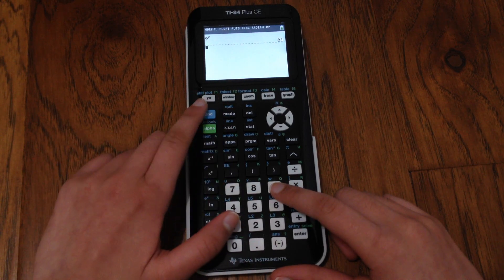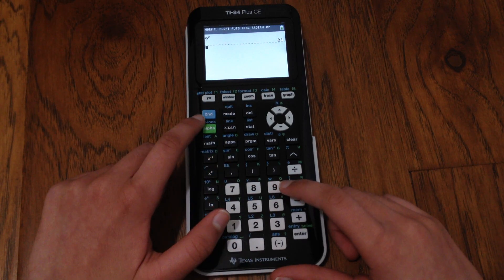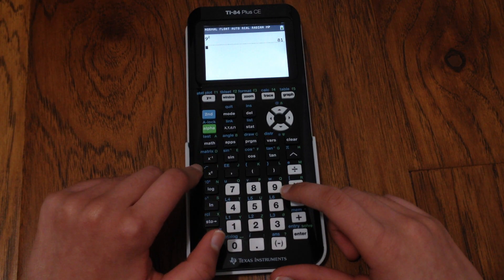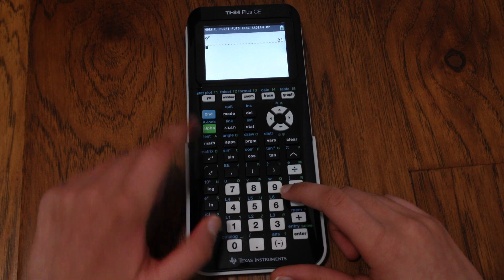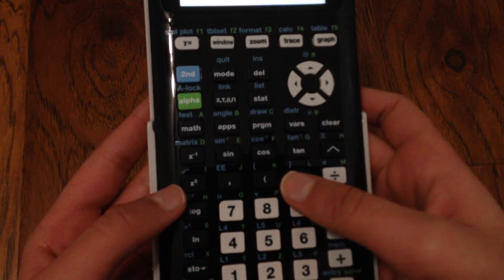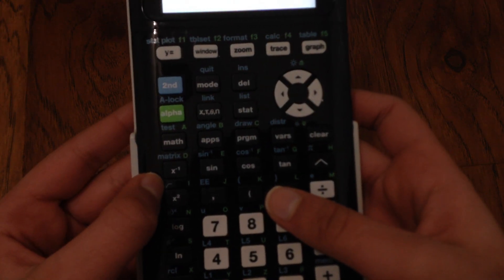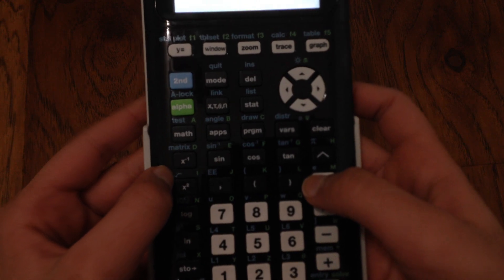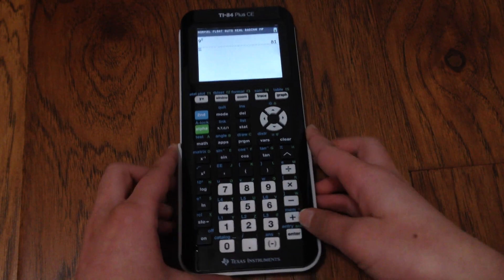For square roots, you do a similar thing, and this is one thing that if you learn, it'll unlock a whole new set of functions and things you can do on your calculator. When you hit the second key, the keys have the function of the blue symbol above them.